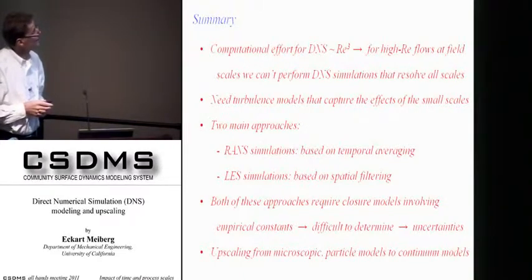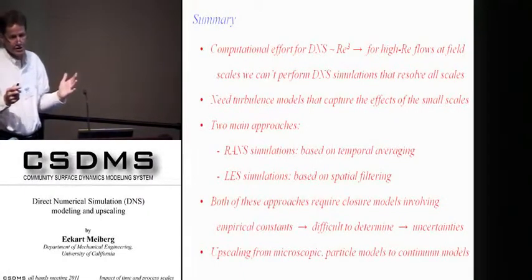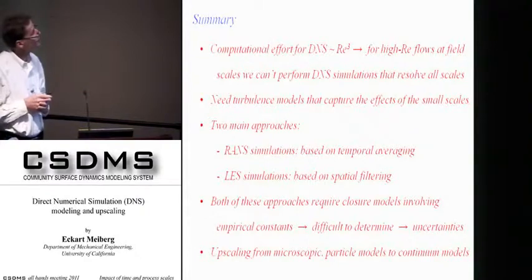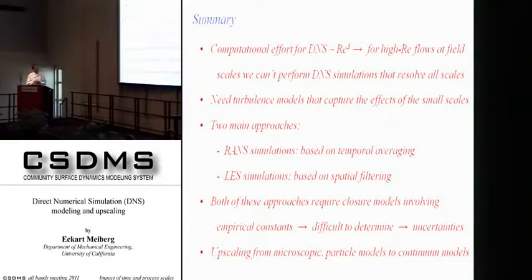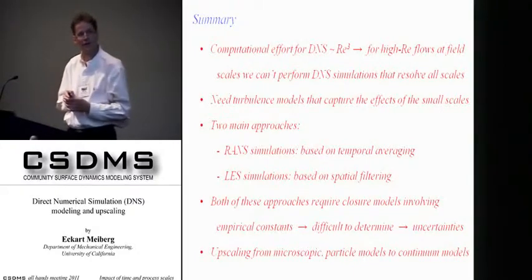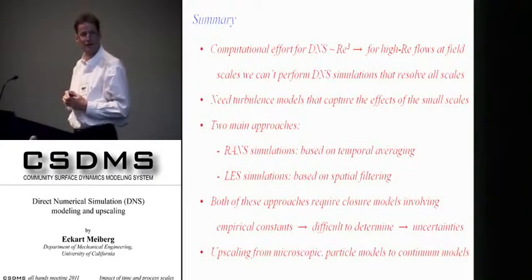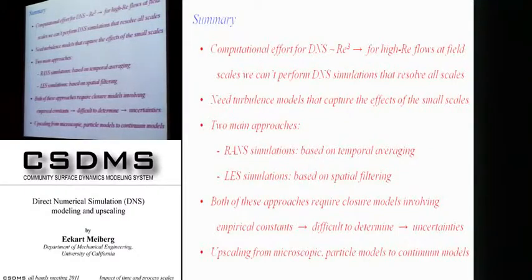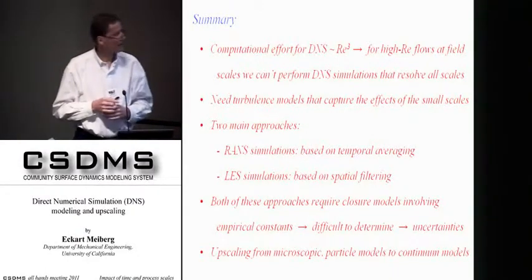To summarize: DNS simulations have great advantages — they give detailed accurate information — but their computational effort increases with the third power of the Reynolds number, so for realistic field-scale currents we cannot perform DNS. That means there is a need for turbulence modeling, via either RANS or LES simulations. However, both approaches require empirical constants and closure models, and so there are uncertainties associated with them. I also briefly touched on other aspects of upscaling — bridging the divide between small and large scales — such as going from microscopic particle-based models to large-scale continuum models, or using nested grids.